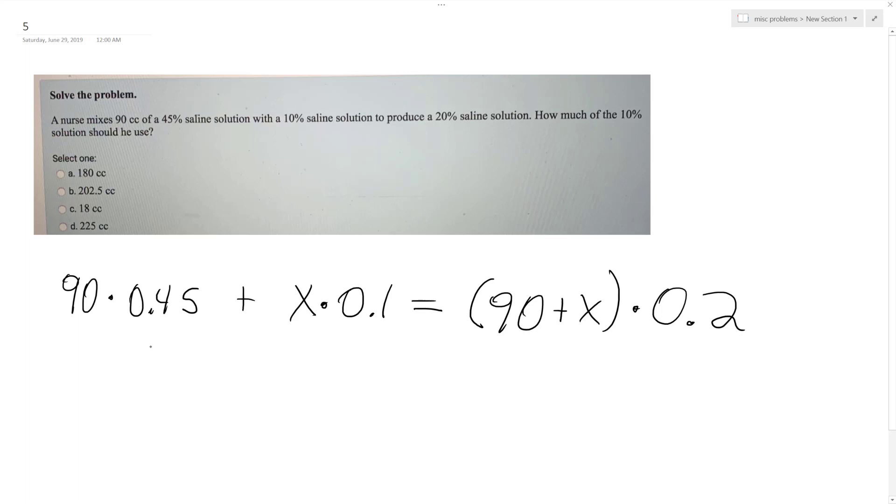Alright, so doing everything here, 90 times 0.45 gives us 40.5 plus 0.1x equals 18 plus 0.2x.